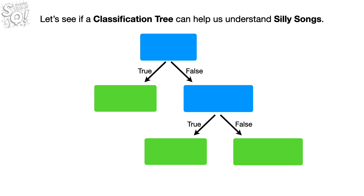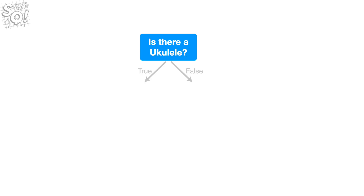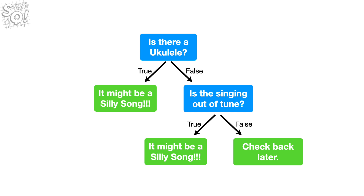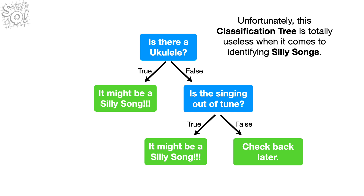Let's see if a classification tree can help us understand silly songs. The first thing we do is ask: is there a ukulele? If there is a ukulele, it might be a silly song. If there isn't a ukulele, is the singing out of tune? If the singing is out of tune, then it might be a silly song. Otherwise, check back later. Unfortunately, this classification tree is totally useless when it comes to identifying silly songs.